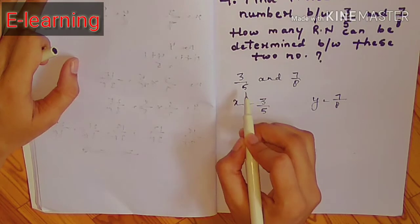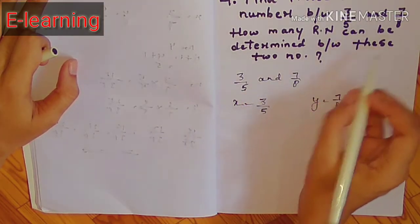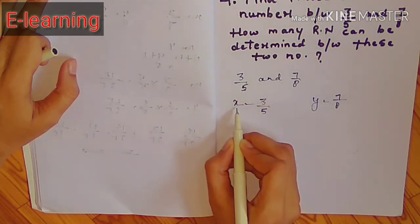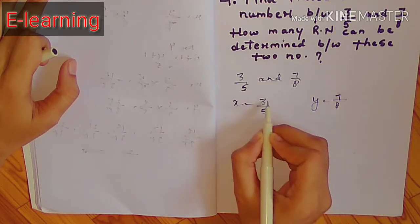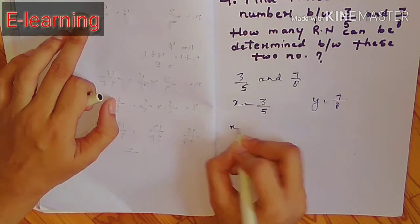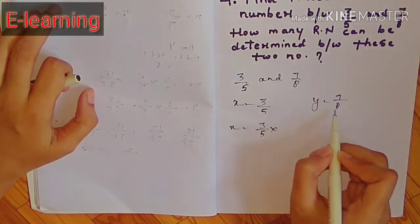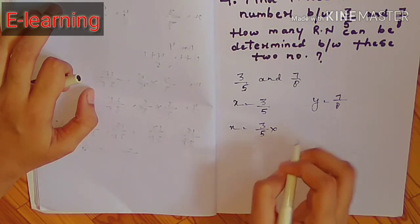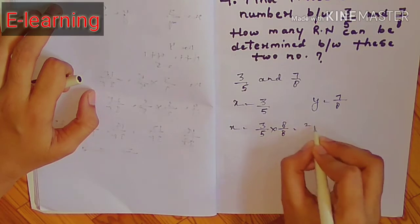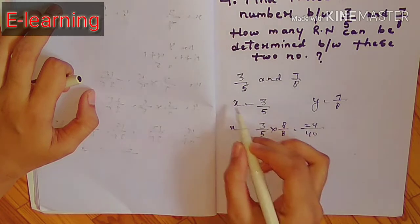देखिए जब भी denominator different हो — जब भी two rational numbers दिए हुए हों जिनमें denominator different हो — तो हम क्या करते हैं: x की value में y के denominator से into करते हैं numerator में और denominator में। 8 × 8 = 24 [i.e., 3×8=24, 5×8=40]।